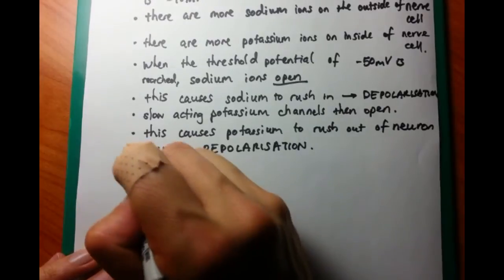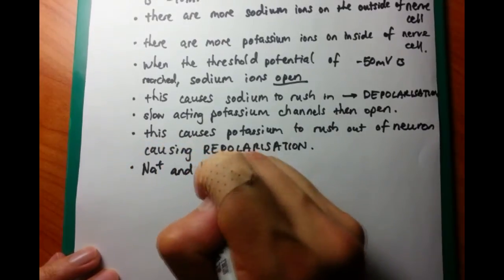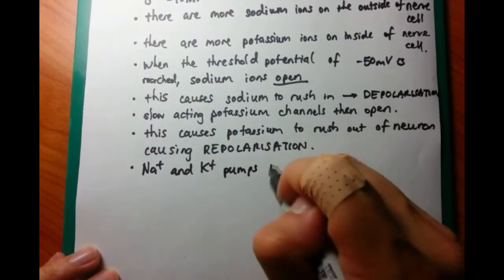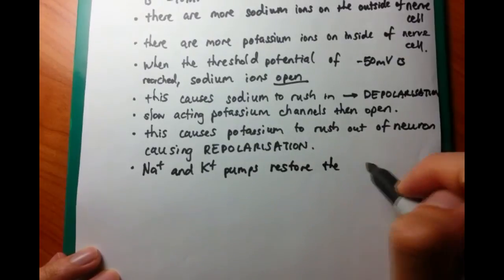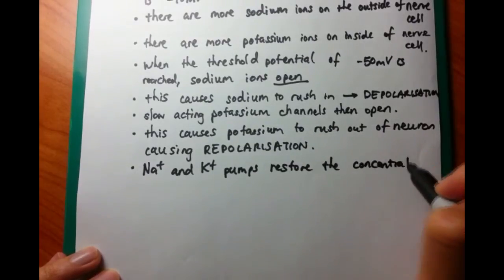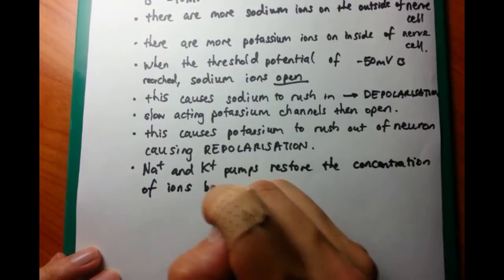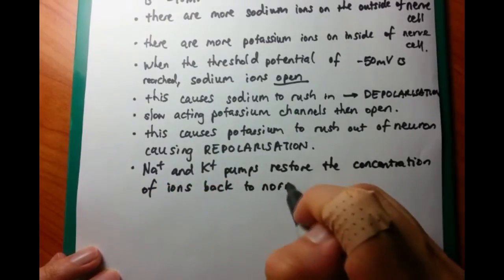So think of the positive leaving the cell. So what's going to happen? It's going to go from plus 30, and it's going to go to zero, to negative, to negative, and it's going to go back down. And then as the repolarization occurs,